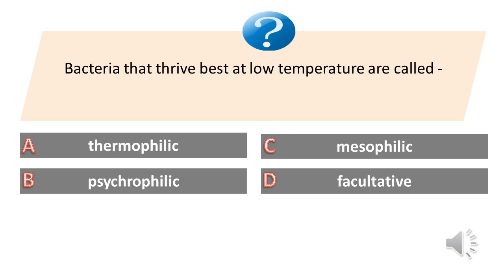Bacteria that thrive best at low temperature are called: A. Thermophilic bacteria. B. Psychrophilic bacteria. C. Mesophilic bacteria. D. Facultative bacteria. The answer is B. Psychrophilic bacteria.